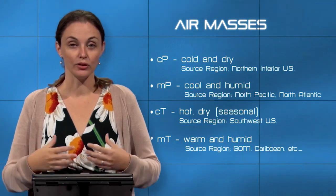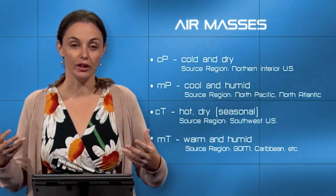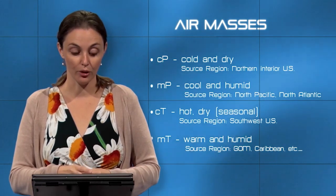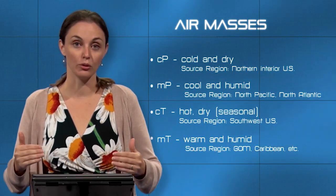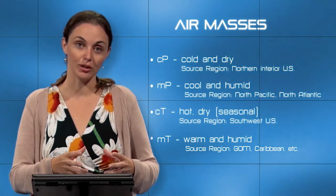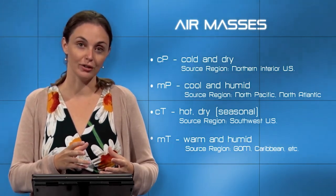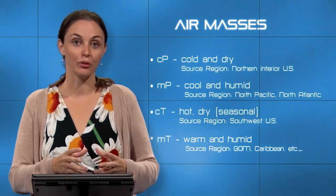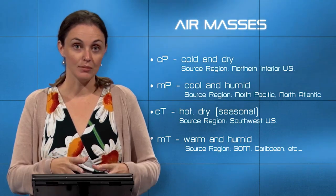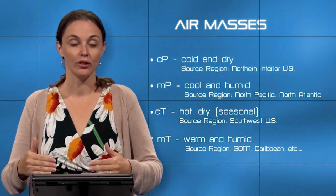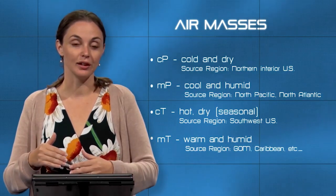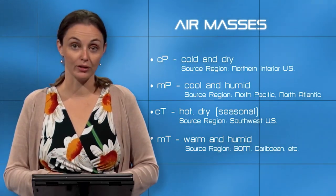To summarize the air masses and their characteristics: CP is cold and dry, originating in the interior of the US; MP is cold and humid, originating over the northern oceans; CT is seasonal, originating in desert-type conditions around 30 degrees latitude — places like the southwest US and Mexico; and MT is warm and humid, found over lower latitude oceans — the South Pacific, South Atlantic, Caribbean, and Gulf of Mexico.